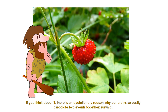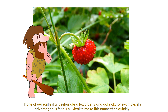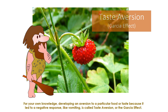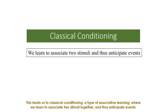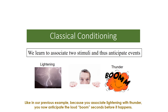There is an evolutionary reason why our brains so easily associate two events together: survival. If one of our earliest ancestors ate a toxic berry and got sick, it's advantageous for survival to make this connection quickly. Developing an aversion to a particular food or taste because it led to a negative response, like vomiting, is called taste aversion, or the Garcia effect. This leads us to classical conditioning — a type of associative learning where we learn to associate two stimuli together and thus anticipate events. Because you associate lightning with thunder, you now anticipate the loud boom seconds before it happens.